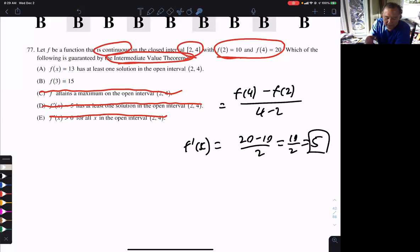The answer is going to be A because B says it has to happen at 3. That's not what the intermediate value theorem says. It says it has to happen between 2 and 4, at some number 2 and 4, not specifically at 3. So the answer is going to be this. Your function must equal 13 at some point between 2 and 4. So the answer will be A. That's what the intermediate value theorem says.